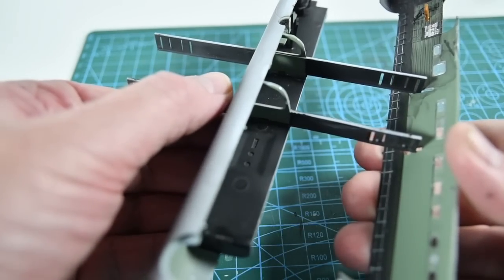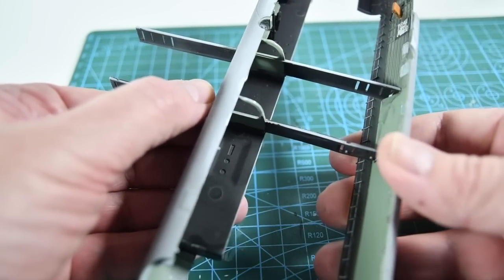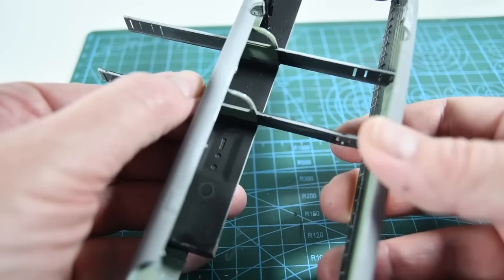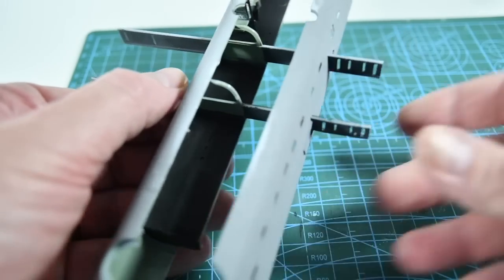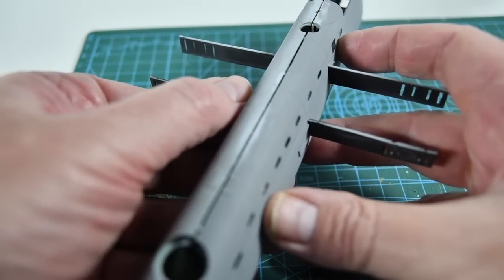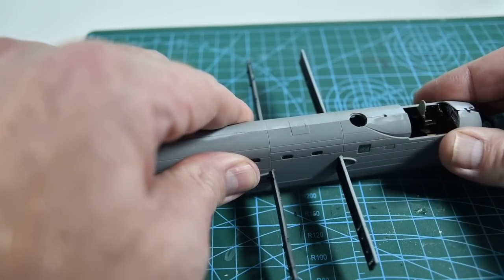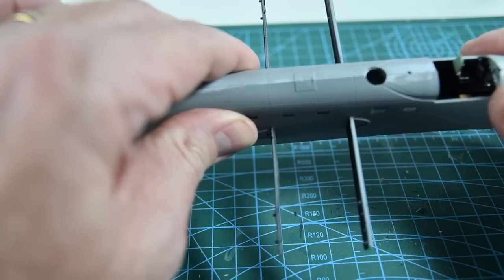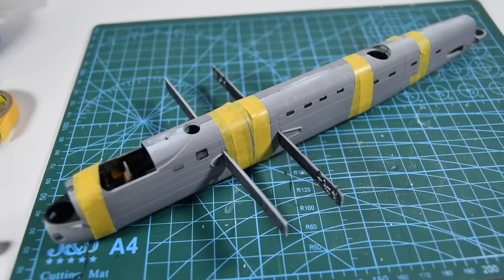So now the big moment, joining the fuselage halves. The spars help loads with this. All I need to do is make sure everything slots into the right places. Then I tape it all up to set, and leave it alone for a little while.